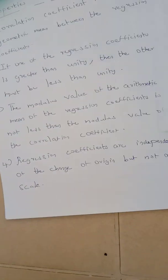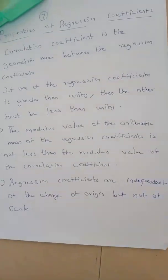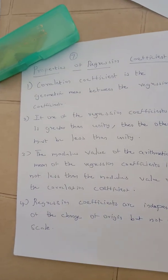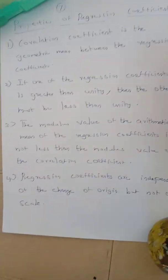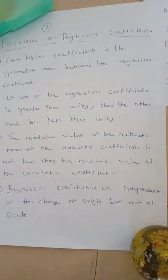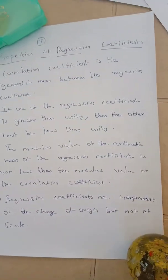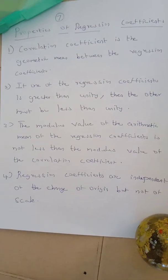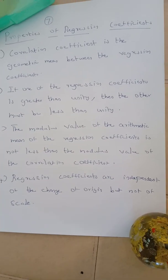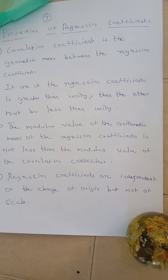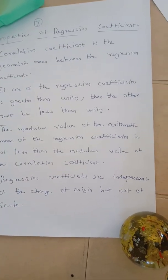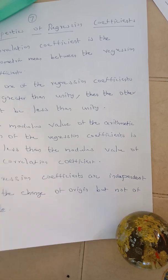Next, the properties of regression coefficients. There are 4 properties in total. First property: the correlation coefficient is the geometric mean between the two regression coefficients. The formula is R squared equal to BXY into BYX.